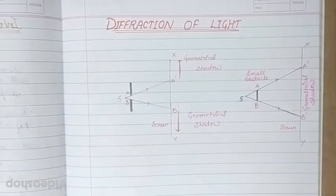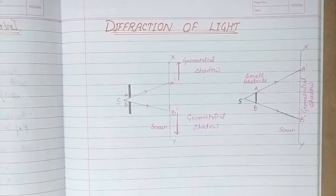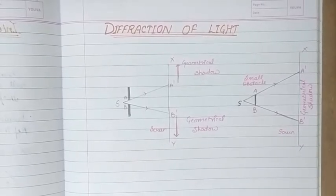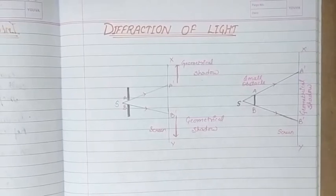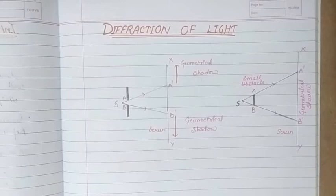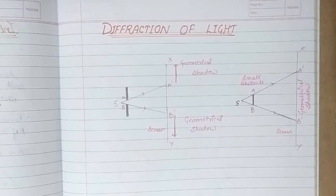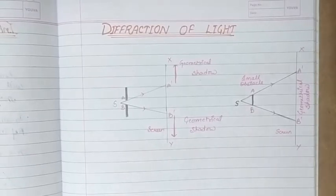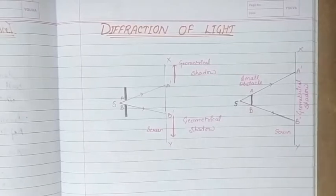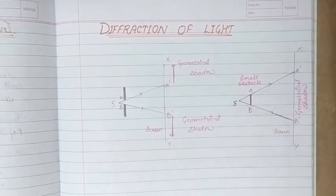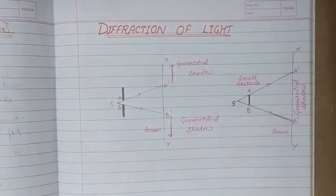After interference, the next optical phenomena based on the wave nature of light is diffraction of light. Since we know that light travels in a straight line, when light passes through a small hole there is a certain amount of spreading. Similarly, when there is some obstacle in the path of a light ray, it appears to bend around the edges of that obstacle and enters its geometrical shadow.